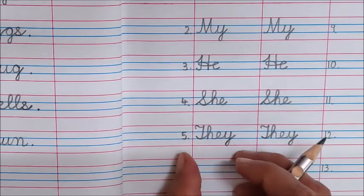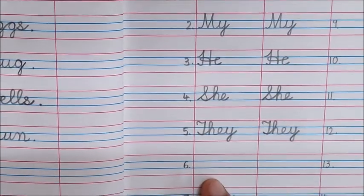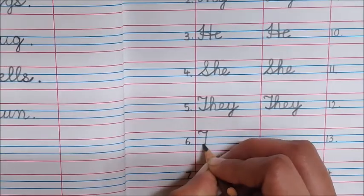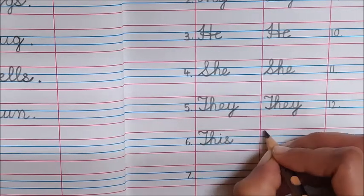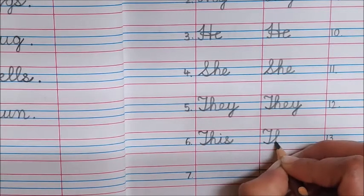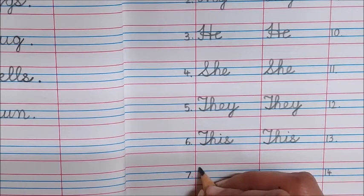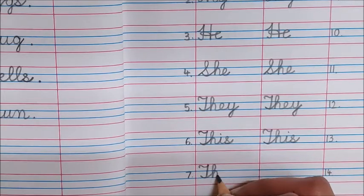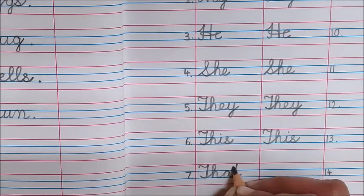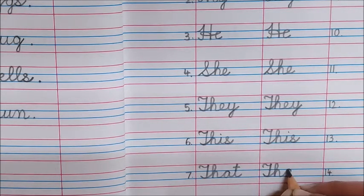T-H-E-Y They. Sixth dot is This. T-H-I-S This. T-H-I-S This. Seven dot is That. T-H-A-T That. T-H-A-T That.